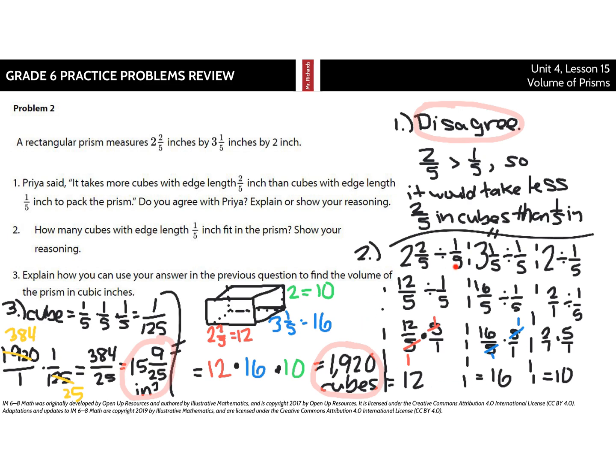Now this looks like a lot of stuff going on here, but if you break it down into the individual question that's really not too terribly difficult. For number two, how many cubes with edge length one-fifth inch fit in the prism? Show your reasoning.